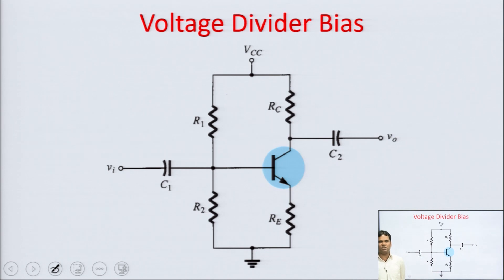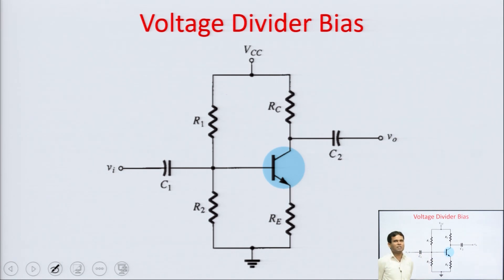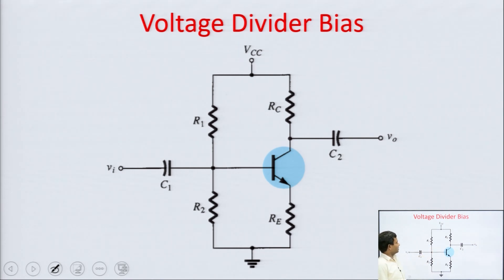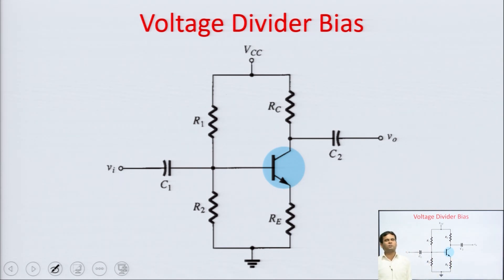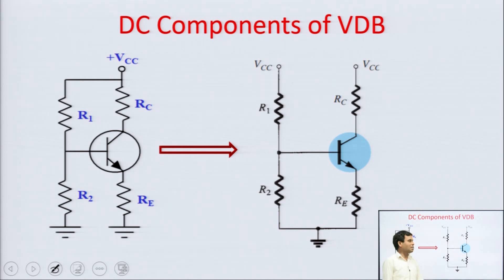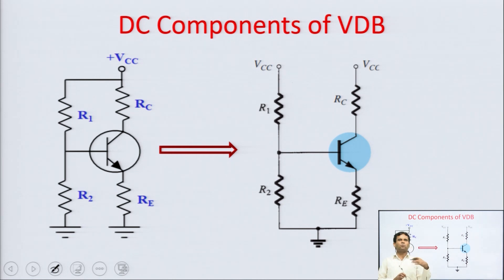To discuss the DC analysis of this circuit, first of all we have to remove the capacitors, because for DC signals capacitors are open-circuited. So the two coupling capacitors C1 and C2 have to be removed, and if there is a bypass capacitor CE, that also has to be removed. After removing these, we have the DC component of the circuit.